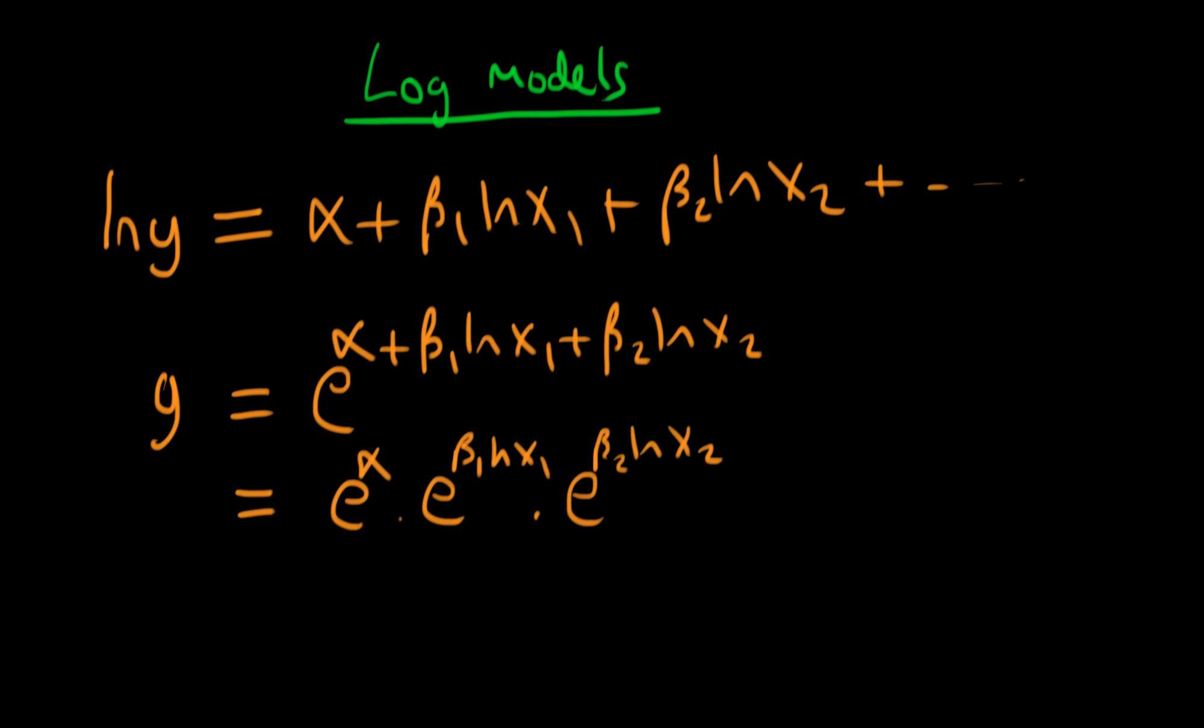Now I'm going to use another log rule, which is that a times log b is the same as log b to the power a. So using that in our equation, we have that y equals e to the alpha times e to the log x1 to the power beta 1 times e to the log x2 to the power beta 2.